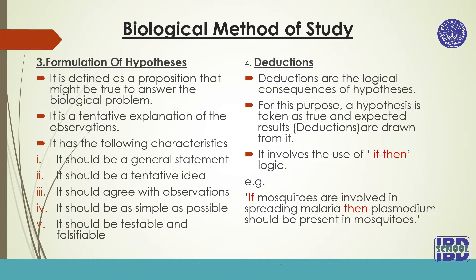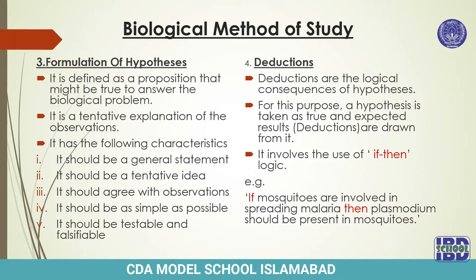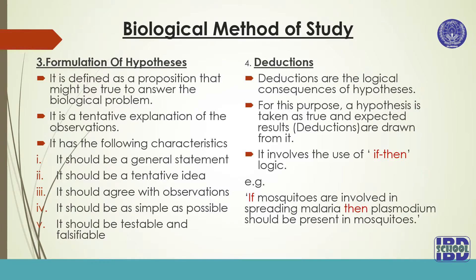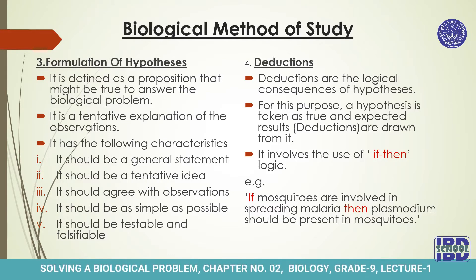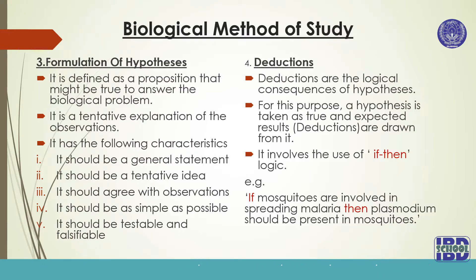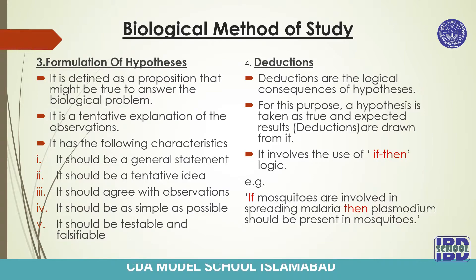The next step is formulation of hypothesis. A hypothesis is defined as a proposition that might be true to answer the biological problem. It is a tentative explanation of the observation — tentative means not final, just temporary. A hypothesis has the following characteristics: number one, it should be a general statement; number two, it should be a tentative idea — it may be accepted, correct, or false.